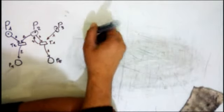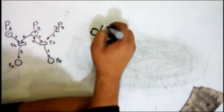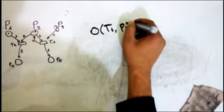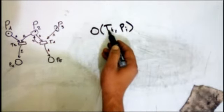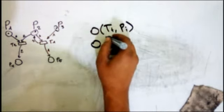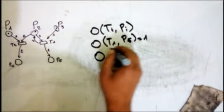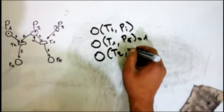Now for the firing itself. Let's introduce the output notation: O(ti, pi) refers to the weight of the output edge from ti to pi. For example, O(t1, p5) = 1, and O(t2, p3) = 0 because there is no output from t2 to p3.